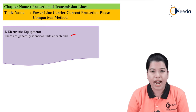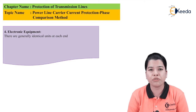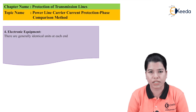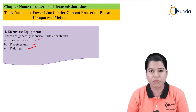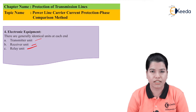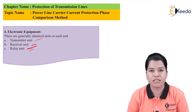There are generally identical units at each end. Whatever units are present at the incoming end of the transmission line, the same units are present at the outgoing end. These units are: transmitter unit, receiver unit, and relay unit. The transmitter unit is used to transmit the carrier signal; the receiver unit is used to receive the carrier signal; and the relay unit is used to operate the circuit breaker.